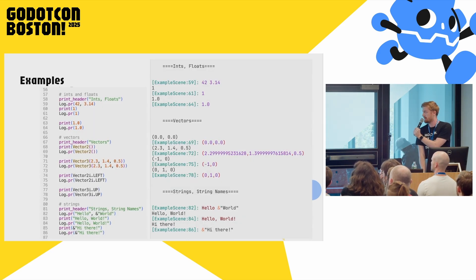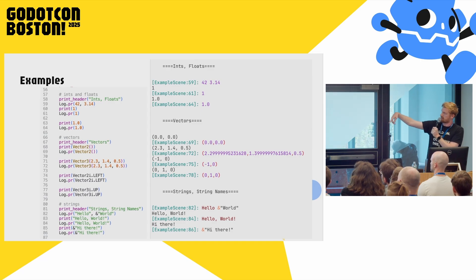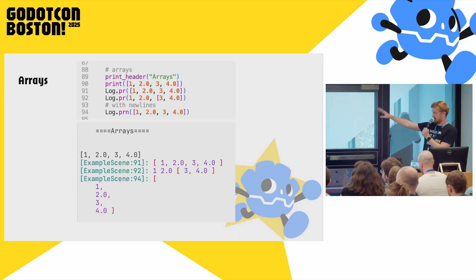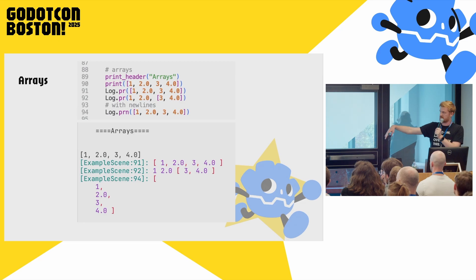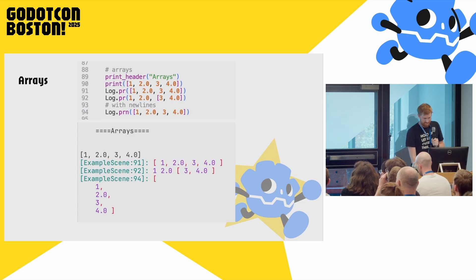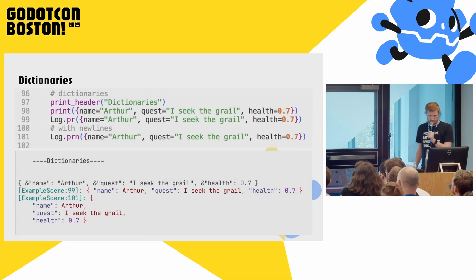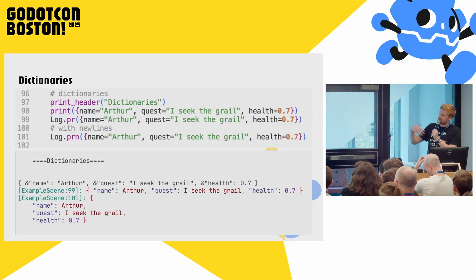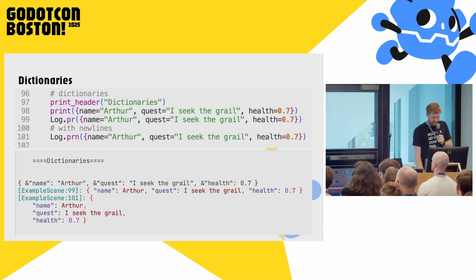Now we're going to look at examples showing it works on ints, vectors, and string names — and we see the line numbers coming in. This is all from the log.gd repo; there's an example scene with a bunch of code. Arrays: logPRN is really for arrays and dictionaries — it makes new lines, though I don't use it as often as I thought I would. Here we have dictionaries.